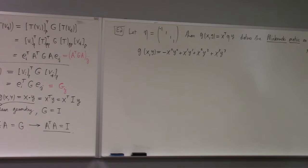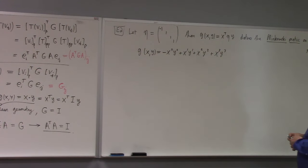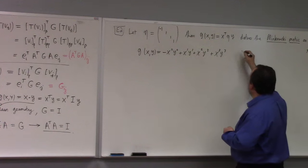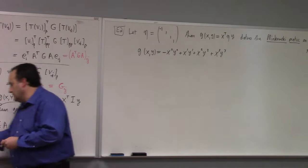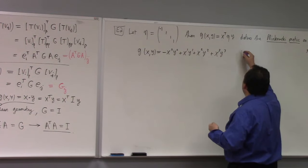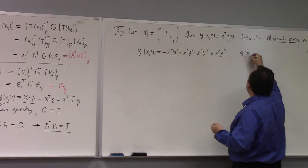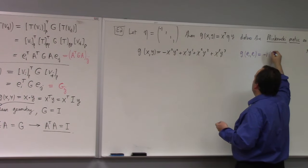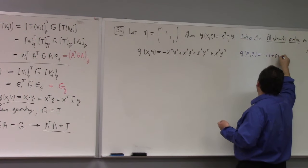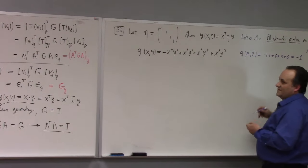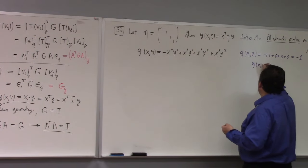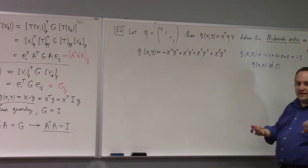Why is this not an inner product? G(x, x) could be negative. For example, G(e_1, e_1) = −1 × 1 + 0 + 0 + 0 = −1. So we certainly don't have G(x, x) ≥ 0. It's not an inner product. Some people play games with this — if you inject an i into the time coordinate (a so-called Wick rotation in theoretical physics), you could turn it into a Euclidean metric. But that's something I don't entirely understand — it seems like a license to do things they're not supposed to be doing.